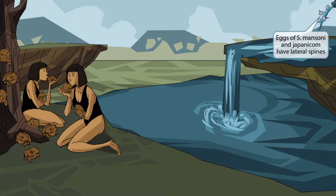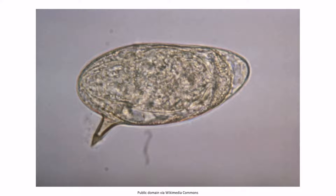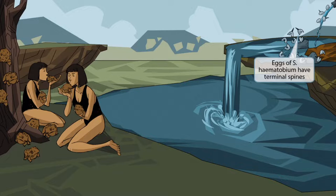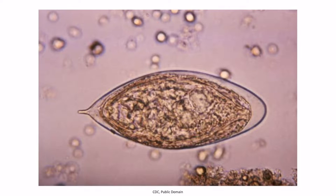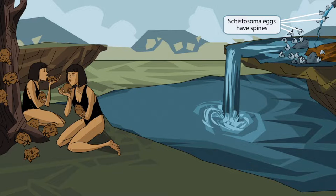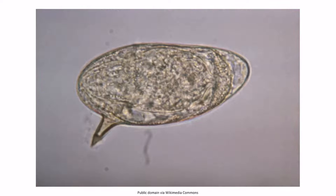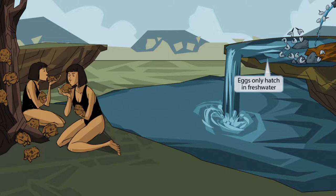Looking at the top left, where the stream empties into the pond, we see mutant eggs falling with strange spikes on their sides. This represents the lateral spines seen on eggs of schistosoma mansoni and japanicum. Other eggs smashed against the rocks have terminal spines, representing schistosoma hematobium. The important thing to remember is that schistosoma species have eggs with spines — if you see such an image on a test, think schistosoma. These eggs are hatching in the water to remind you that schistosoma eggs hatch in freshwater only.